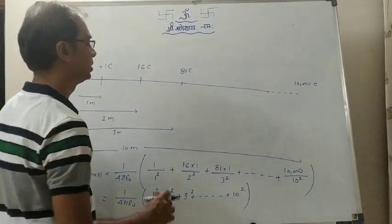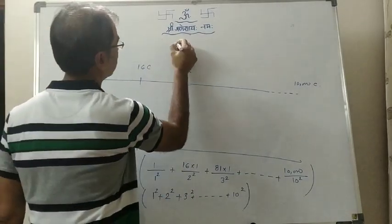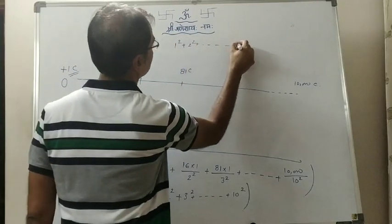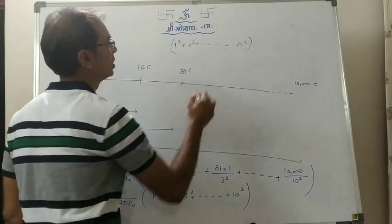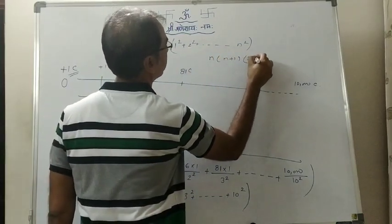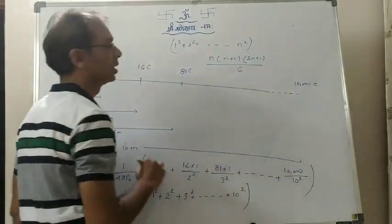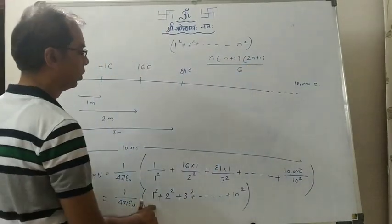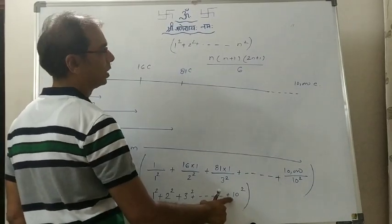So in this, what will be the answer if we have to find the sum? Suppose we have 1 square plus 2 square plus ... plus n square. The sum of this series is n(n+1)(2n+1) by 6. That is the sum of this series. So same thing we will do over here. The n value here is 10.